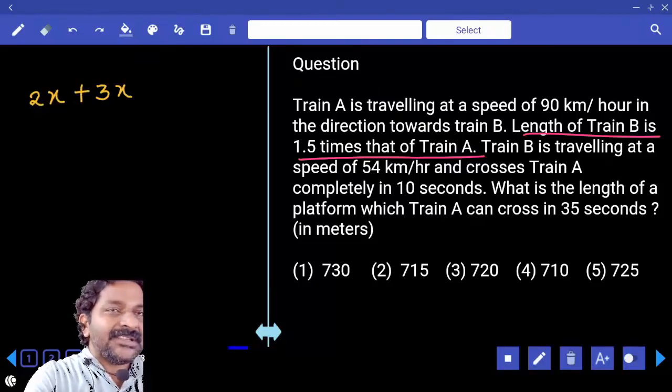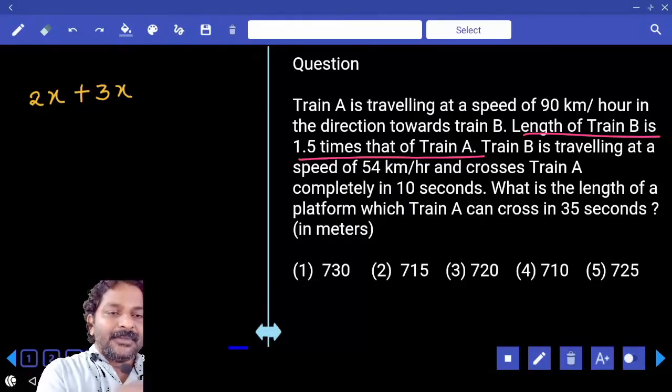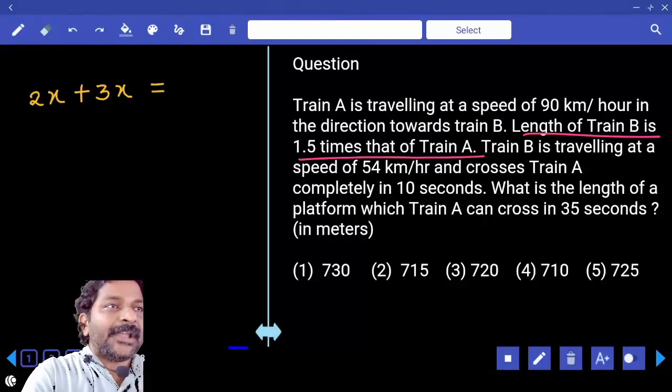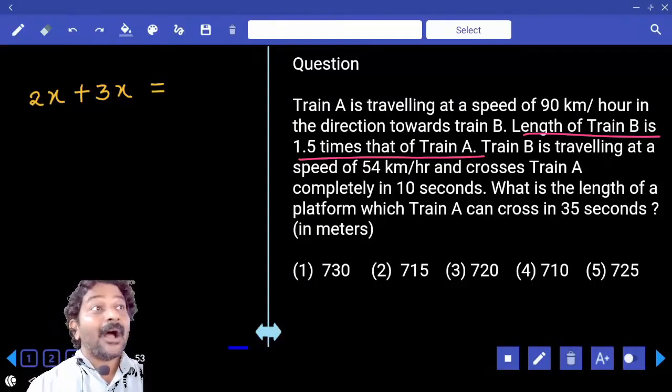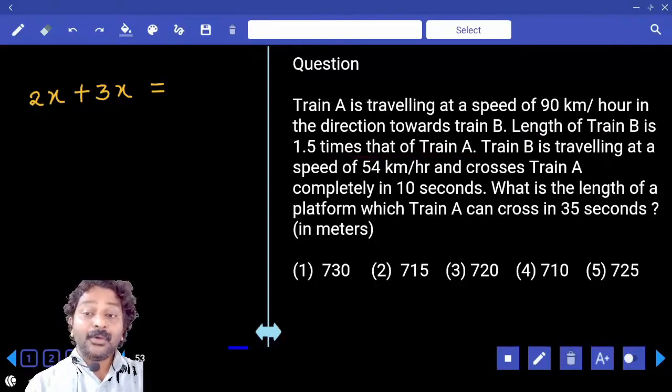If train A crosses train B, distance covered is train length A plus B only. Distance is equal to speed into time. In which direction both are moving? Opposite direction. How do you know that?